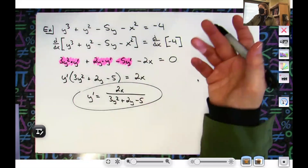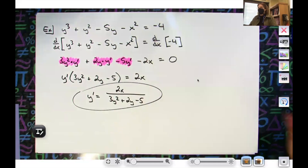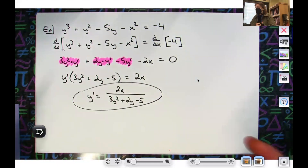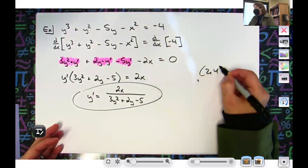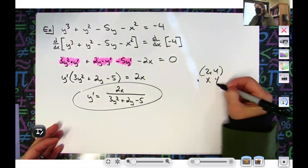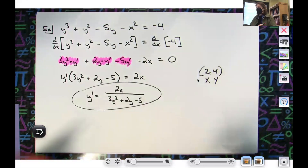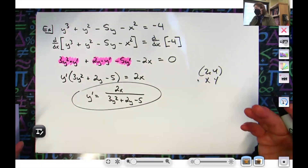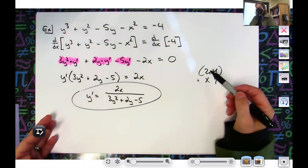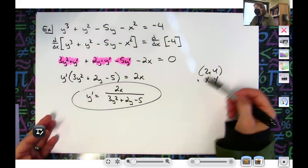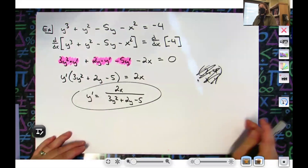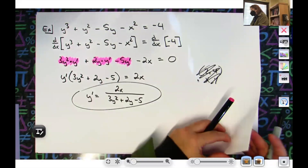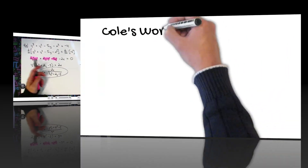So if I told you the point (2, 4) is on this curve, I would plug 2 in for x and 4 in for y, work it out, and get the numerical slope. Chances are (2, 4) is not on that curve since I just randomly made up a point, but if that point were on the curve, that would work. This was just straightforward power rules.